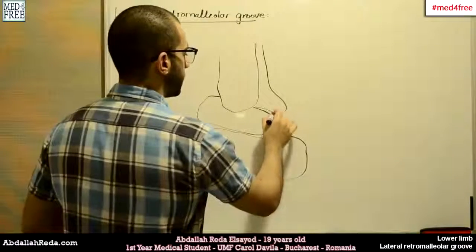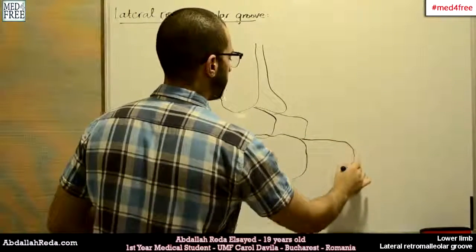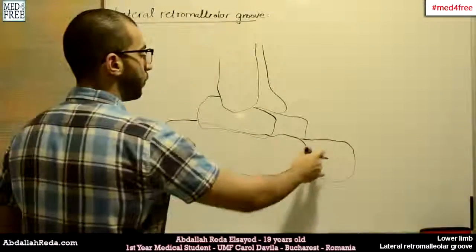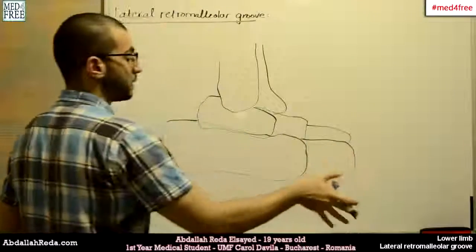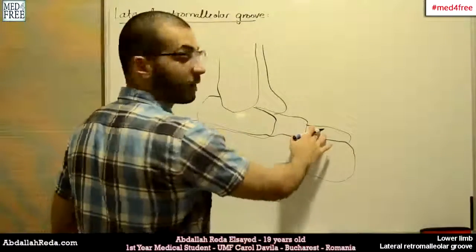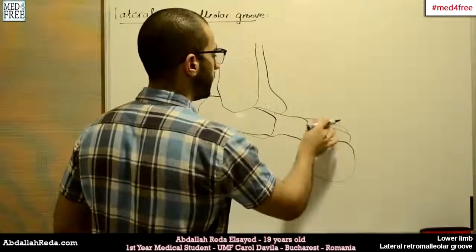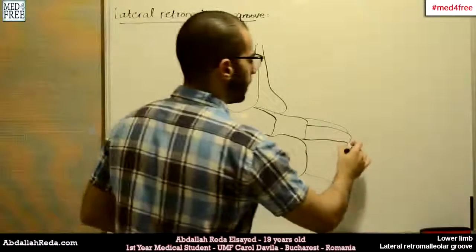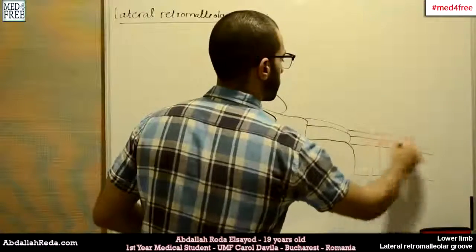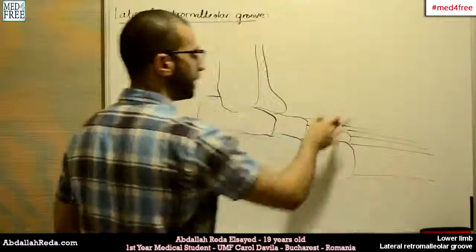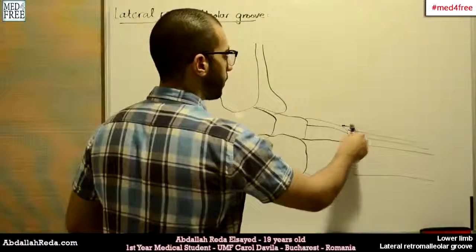So talus, calcaneus, and here we have the navicular, the cuboid — this is the lateral view. Here we have the lateral cuneiform, the intermediate cuneiform, and then we have the metatarsals from lateral to medial: the fifth, fourth, third, second, and so on.